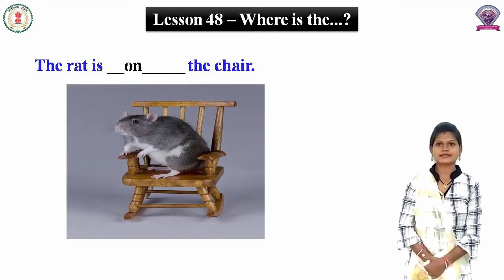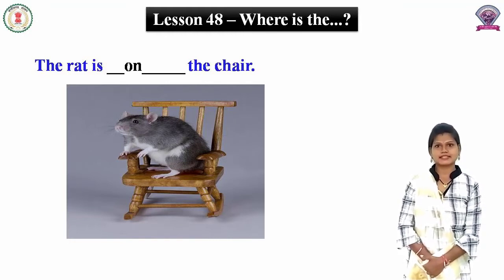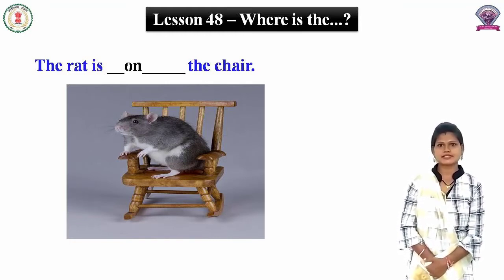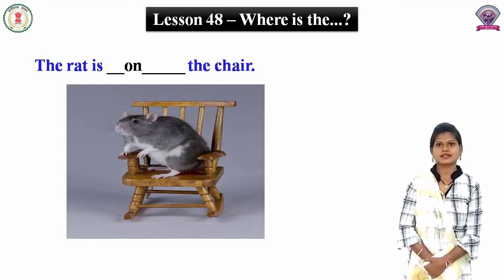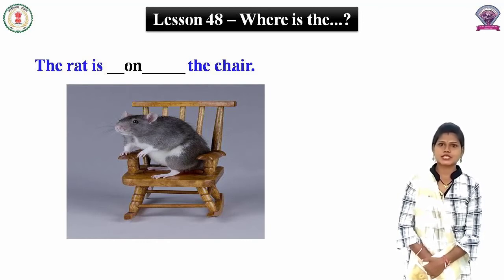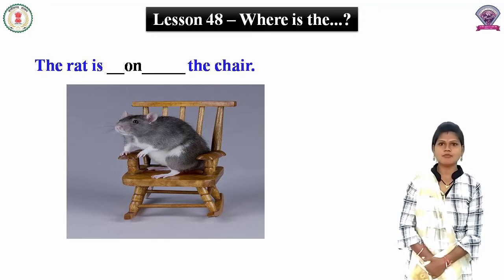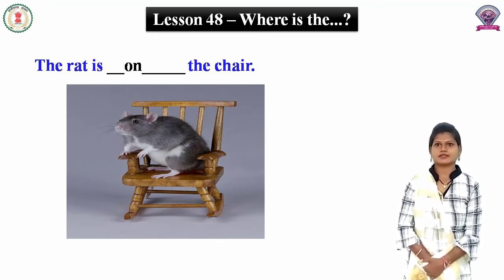Look at this picture. इस picture में आपको क्या दिखाई दे रहा है? Where is the rat? Rat कहाँ है? तो rat जो है वो कुर्सी पर है। जब कोई वस्तु किसी वस्तु के उपर होती है तो हम 'on' लगाते हैं। The rat is on the chair.